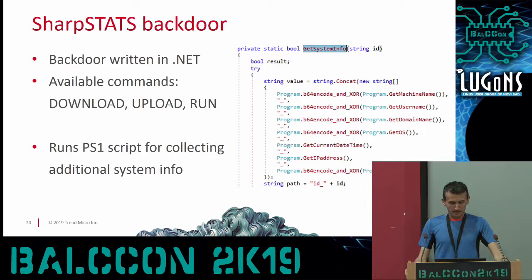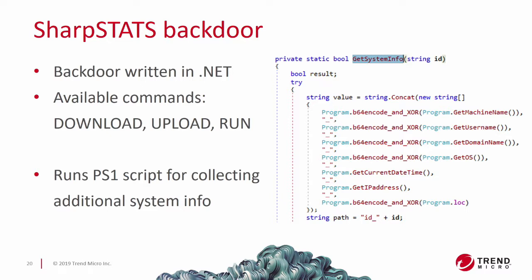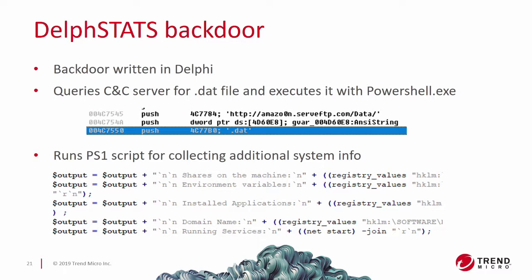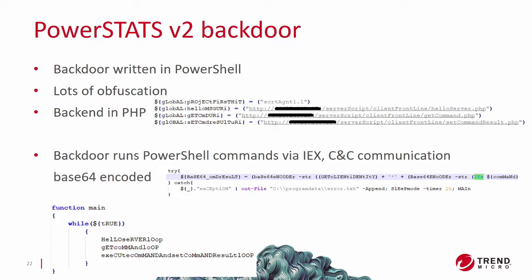We also found two more backdoors: one called SharpStats and another called DelftStats. These backdoors were quite simple, implementing only basic features for downloading, uploading, and running commands. They were written in different languages - either .NET or Delphi - and some routines were done via PowerShell scripts that were dropped, executed, with results read by these backdoors and uploaded to the C2 servers.